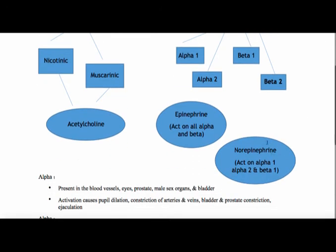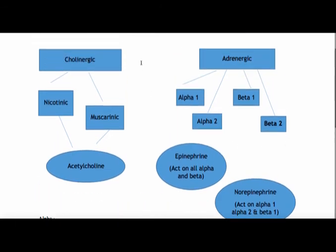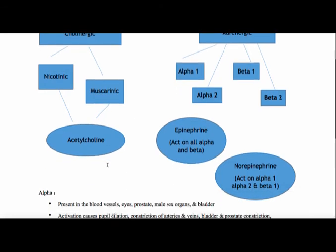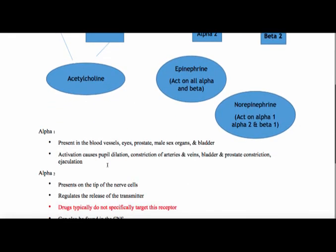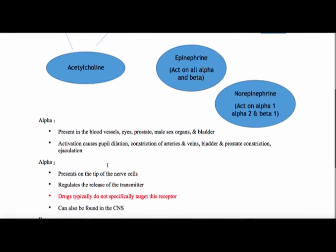Norepinephrine hits alpha 1, alpha 2, and beta 1 — it does not hit beta 2. This is the parasympathetic or the cholinergic side, and like I mentioned, it's nicotinic or muscarinic, and acetylcholine is associated with that one.